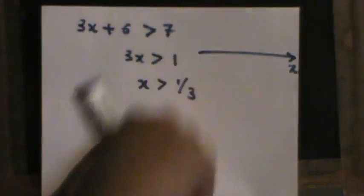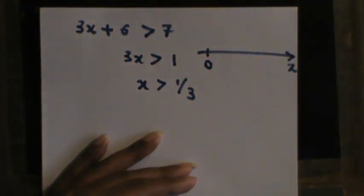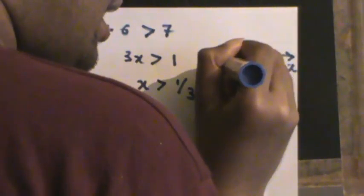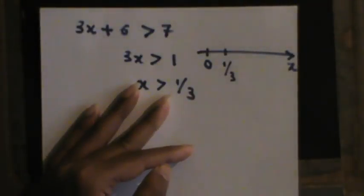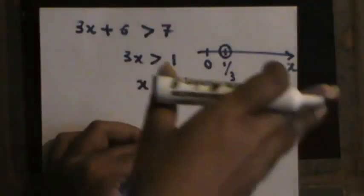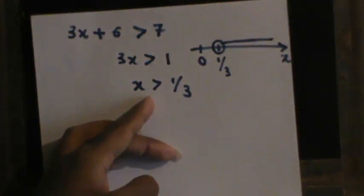If you draw that on a number line — only the x-axis is needed here — one third will be marked somewhere on the line. Since x is strictly greater than one third and not equal to it, you draw an uncolored (open) circle at one third. All values greater than one third satisfy the inequality, so you shade from one third to positive infinity.